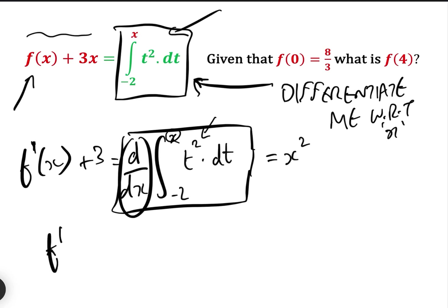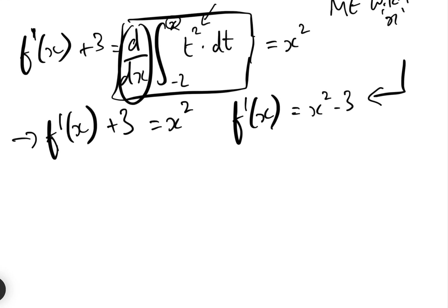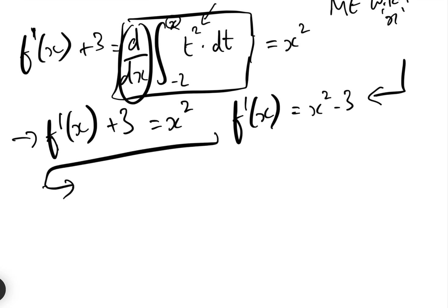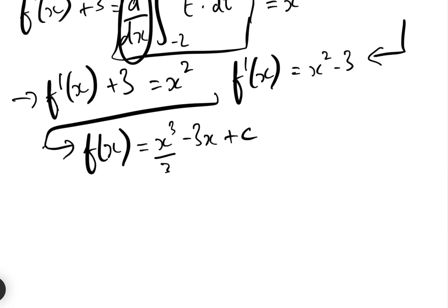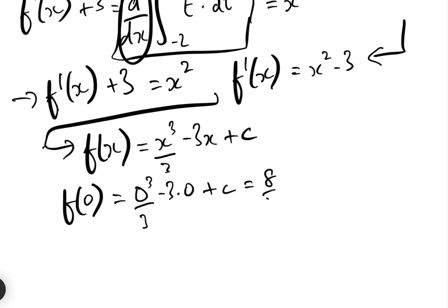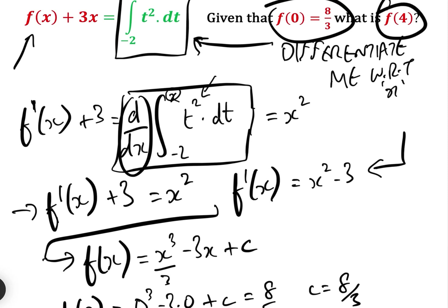So we now have our differential equation — this is the way most of these questions will come: you will end up with a differential equation. This particular differential equation is extremely simple — in fact, it's the most simple you can get. All we need to do now is just integrate. So if f'(x) = x² − 3, therefore f(x) = x³/3 − 3x + c. That's just basic integration. The question tells us f(0) = 8/3, so putting zero in: 0³/3 − 3×0 + c = 8/3, so clearly c = 8/3. So our function f(x) = x³/3 − 3x + 8/3. Then the question asks us: what is f(4)?